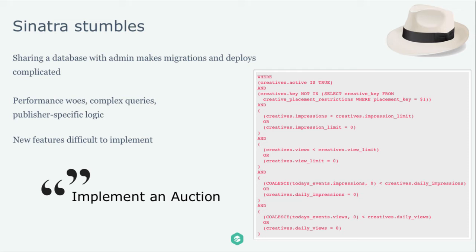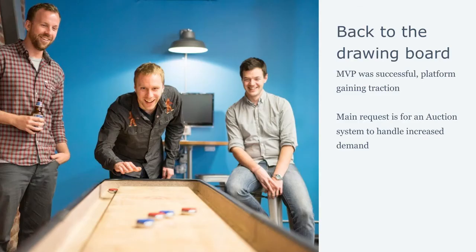The other issue was that new features were difficult to implement. At this point we had a round-robin ad server, so you'd request an ad and get one at random. But what we really needed was an auction where the highest-paying advertisers get run first. So we went back to the drawing board. We considered the MVP a success — we were getting traction and a lot of traffic. The request for the auction was to help satisfy increasing demand when we didn't have as much publisher supply: if you have more requests than inventory, you need to prioritize, and the auction was the solution.